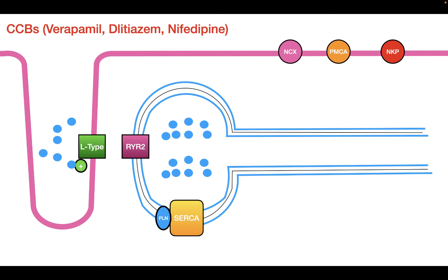This causes a conformational change to occur, which opens the channel, allowing calcium to flow inside. The calcium then interacts with ryanodine receptors on the sarcoplasmic reticulum, which allows a conformational change to occur, allowing calcium to leave the sarcoplasmic reticulum and go into the cytosol. This process is called CICR — calcium-induced calcium release — because the calcium brought in by the L-type channel interacts with the ryanodine receptor, allowing more calcium to come in. This increase in calcium then leads to a contraction.